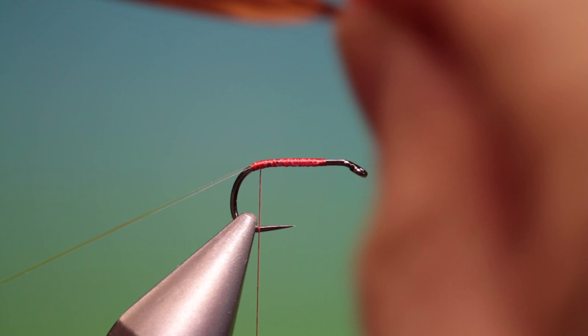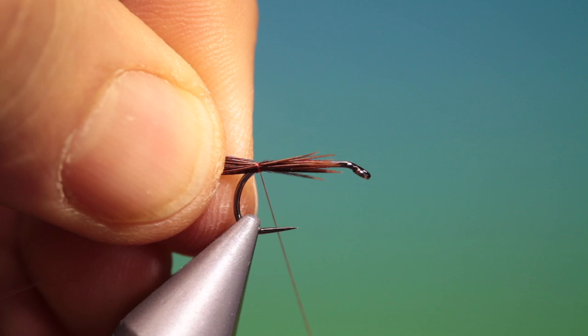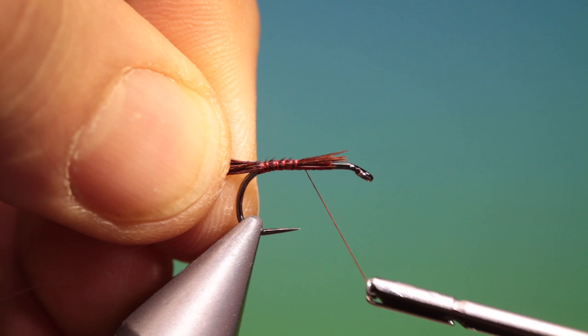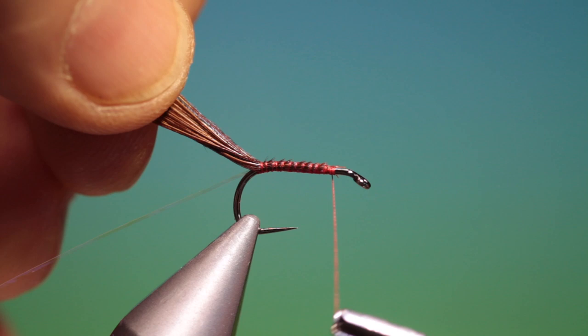Take a bunch of pheasant tail fibre, it's quite a hefty bunch. And we tie these in, top of the hook shank, back by the tips. We'll just go forward. And we go back again.